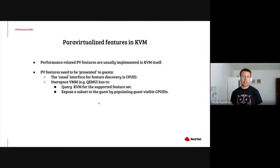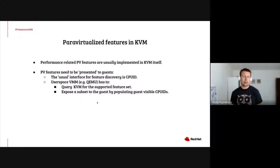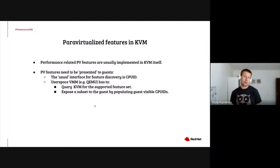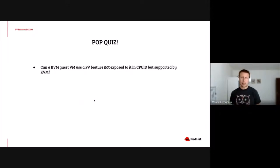Performance-related features are usually implemented in KVM itself and not in user space. But after the feature is implemented, we still need to somehow let the guest know that the feature is available. On x86, the regular interface for that is CPUID feature bits. So your userspace VMM has to do two things: first, it has to query KVM for the supported enlightenments or PV features, and second, it needs to set the corresponding feature bits in guest-visible CPUIDs.